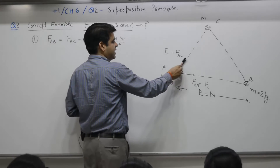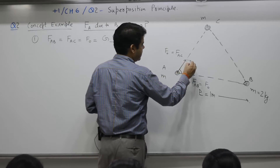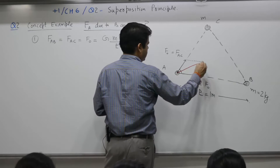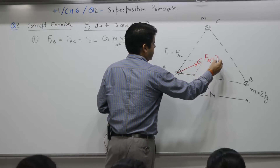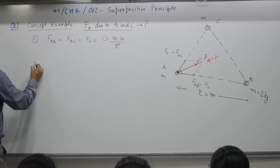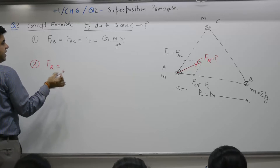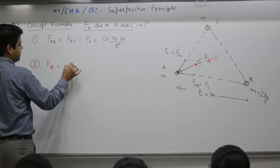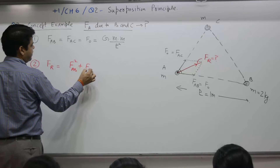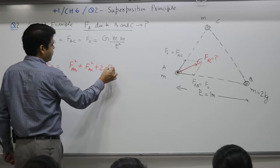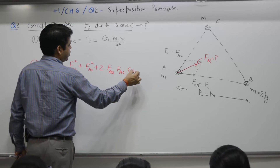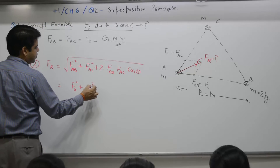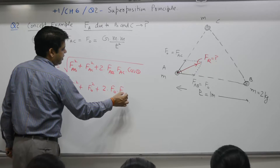There is one vector and another vector, with an angle of 60 degrees between them. To find the resultant, use the formula: √(A² + B² + 2AB cosθ). Substituting, we get √(F₀² + F₀² + 2·F₀·F₀·cos60°). Cos 60° equals 1/2, so the 2 and the 1/2 cancel, giving F₀² + F₀² + F₀². That is 3F₀², so the resultant is √3·F₀.